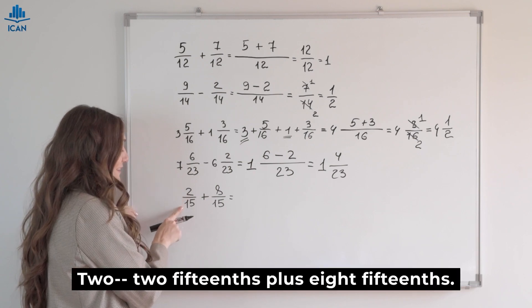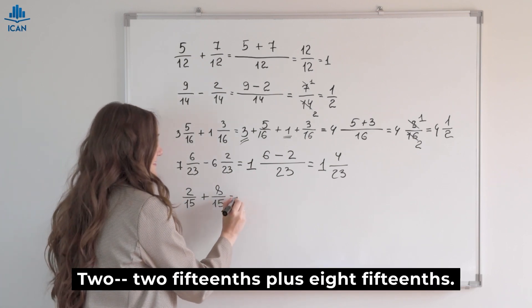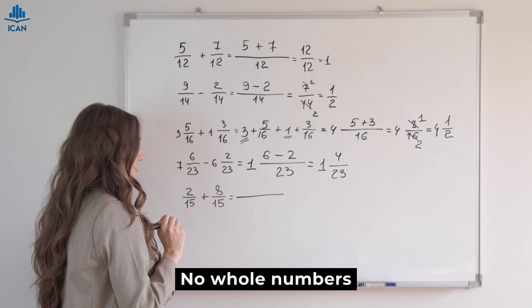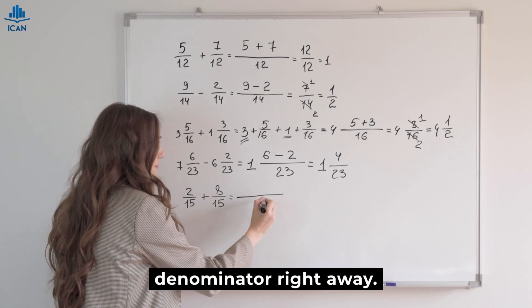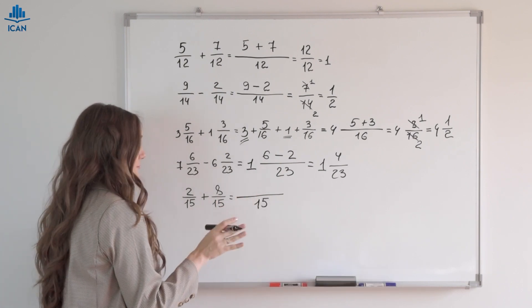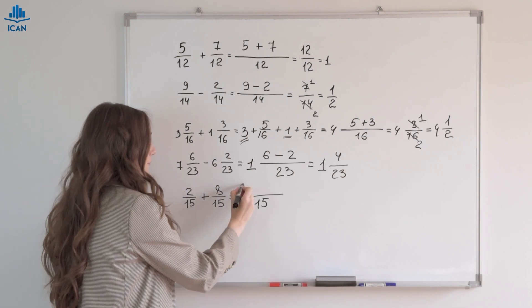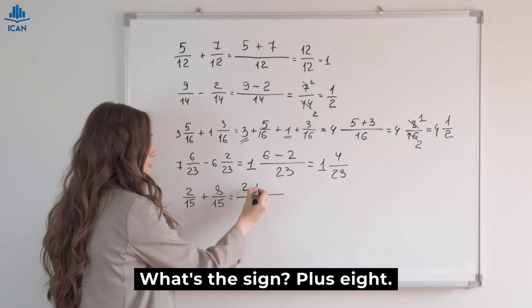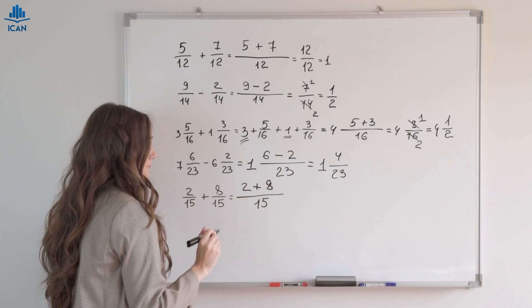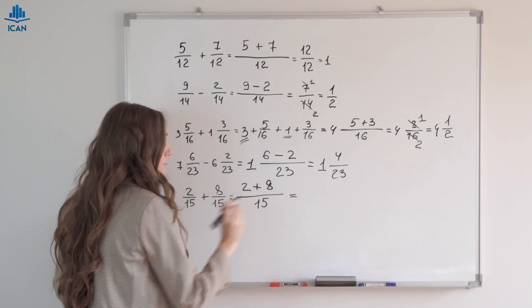Here's another interesting example we'll simplify a bit. Two-fifteenths plus eight-fifteenths. No whole numbers here, so we write 15 as the denominator right away. Great. 2. What's the sign? Plus eight.